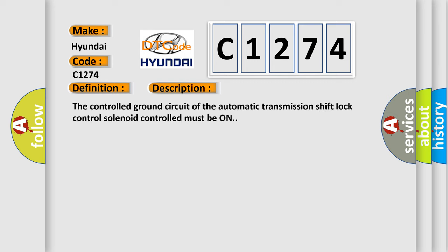And now this is a short description of this DTC code. The controlled ground circuit of the automatic transmission shift lock control solenoid must be on.